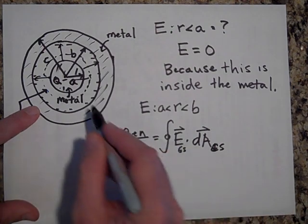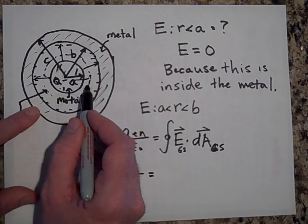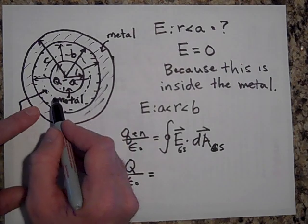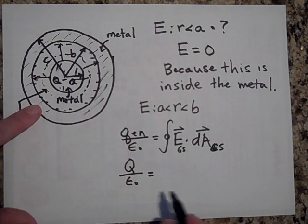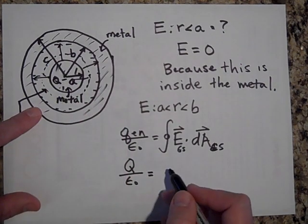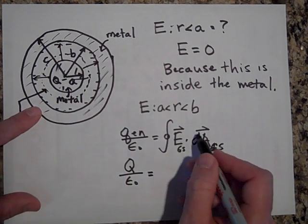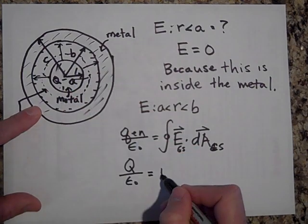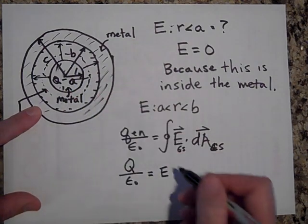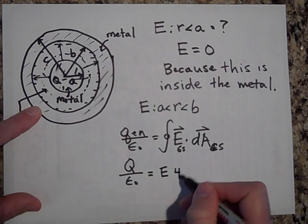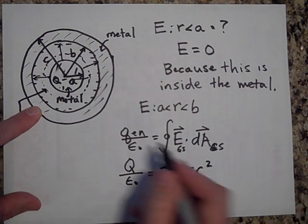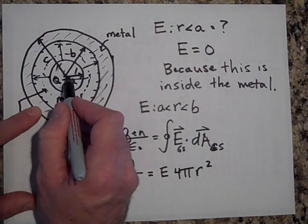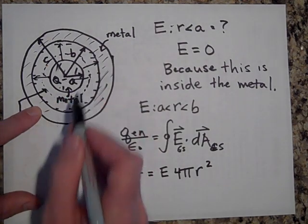I can also pull the E out of the integral because E is the same amount at each point on this Gaussian surface. And so when I pull the E out, I'm basically just summing up all the DAs. And so I have E equals, when I sum up all the DAs with the integral, four pi times R squared, where R is the distance from the center all the way to the Gaussian surface.